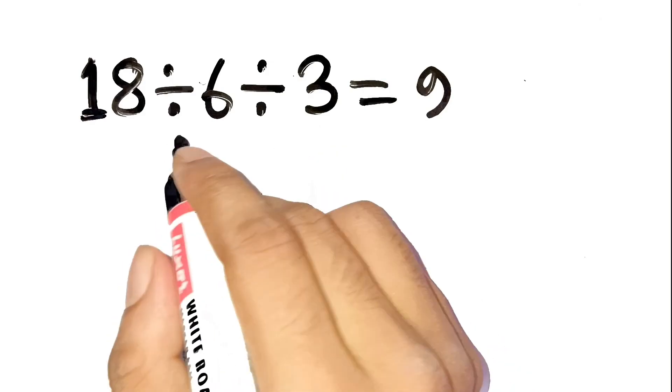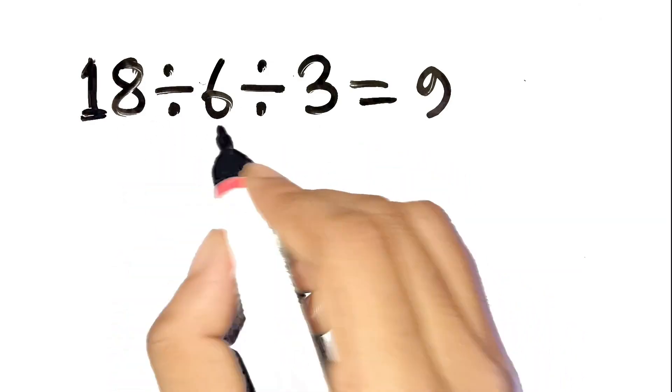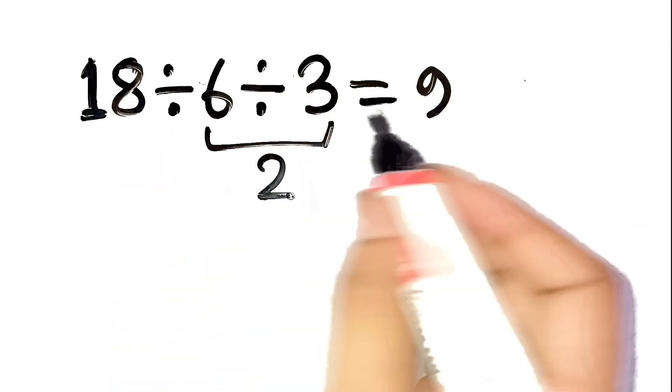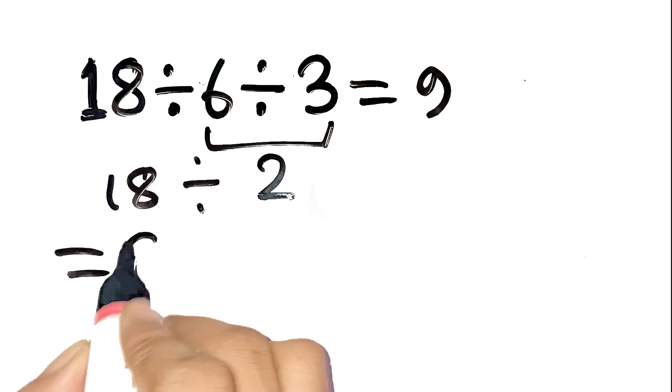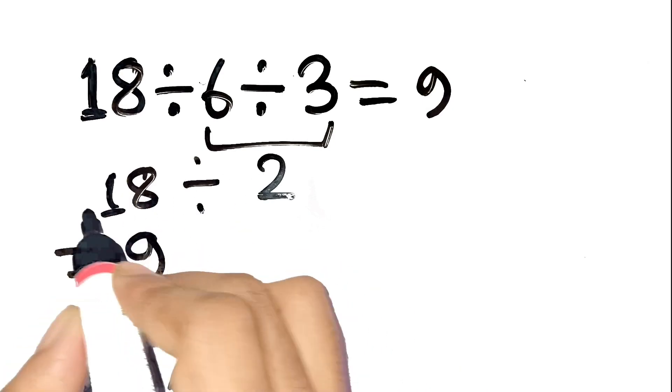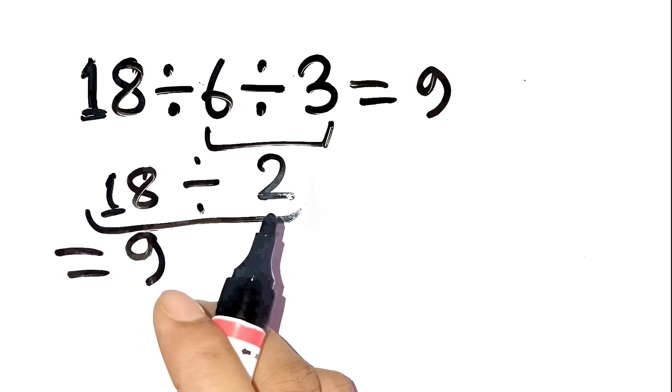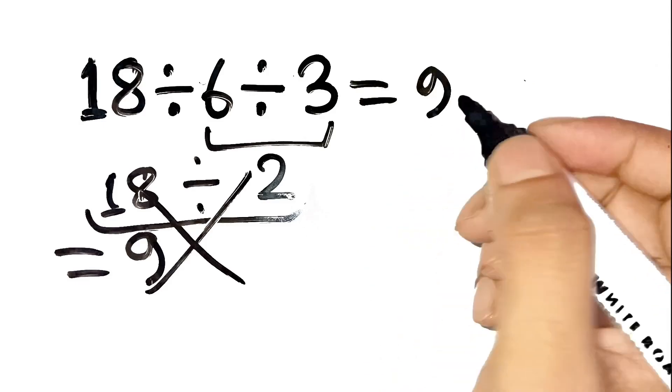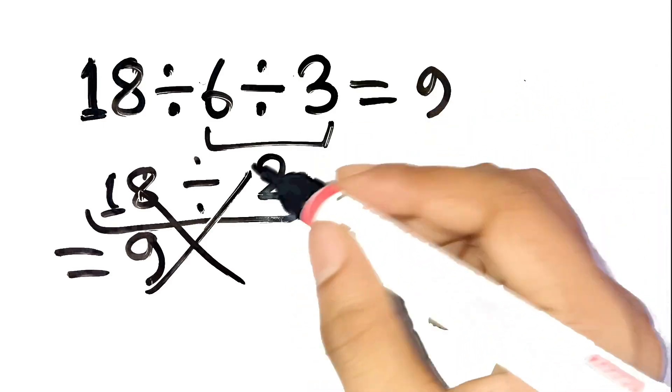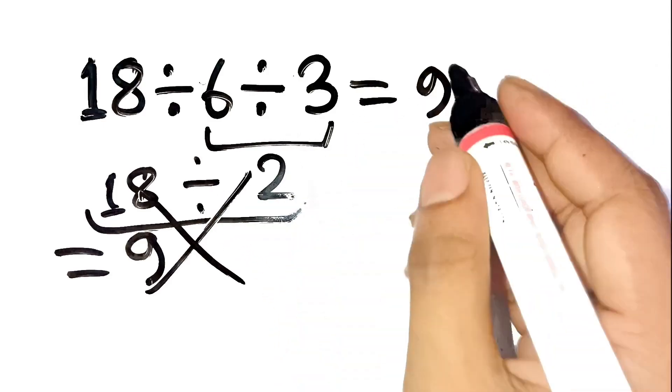I can almost hear your thought process. 6 divided by 3 is 2, then 18 divided by 2 is 9. Looks neat and clean, right? That's exactly why most people get this wrong on first glance. It seems logical, but the order of operations has a catch here.